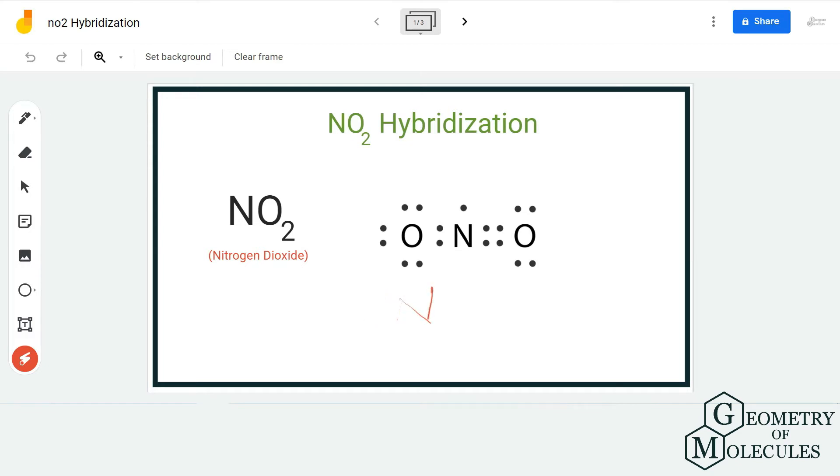To start with it, we are first going to look at the Lewis structure of NO2. If you look here, the nitrogen atom is forming a double bond with oxygen atom.